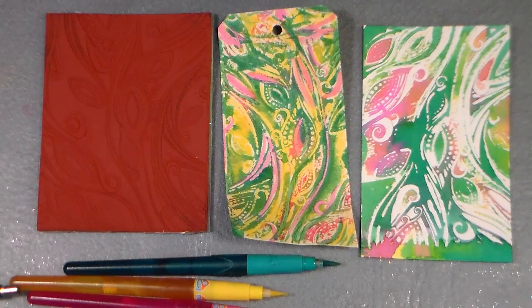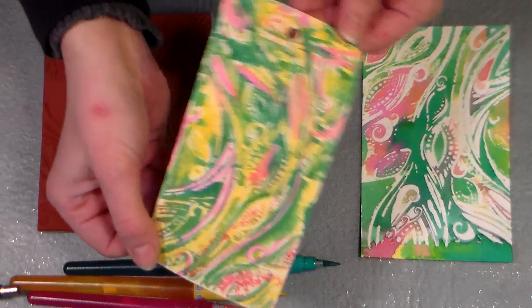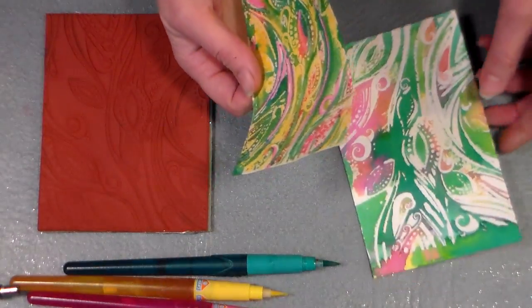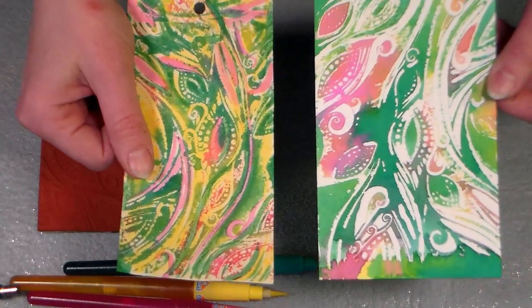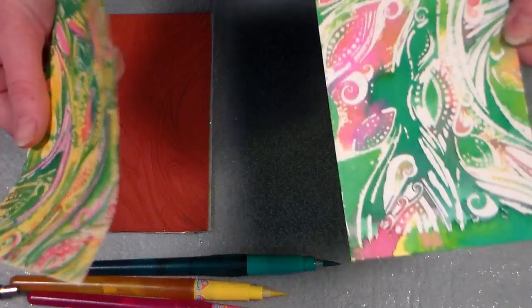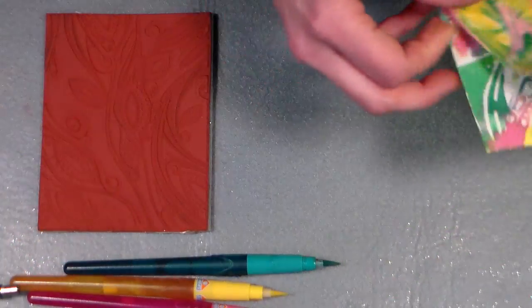Hey there, Lindsay here, The Frugal Crafter, with a super quick technique for you today on how to get a batik look with your background stamp. Here's an example on watercolor, here's an example on a tag, and I'm going to show you how to do this on a tag since I figure more of you have cardstock hanging around than watercolor paper, plus it's cheaper.